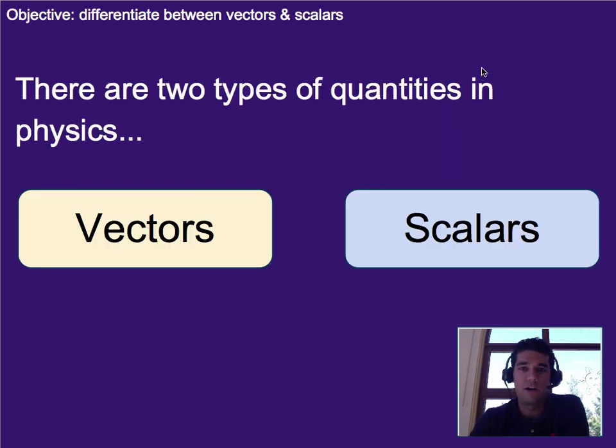So in physics, there are two types of quantities. In other words, if we talk about numbers and things like that, they fall into one of two categories: vectors and scalars. And this is true in all of science, as well as math.